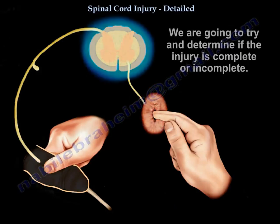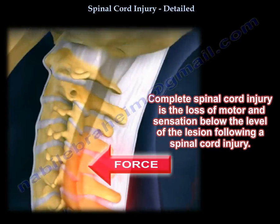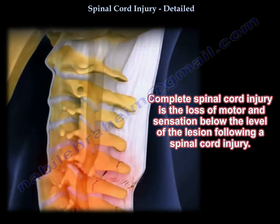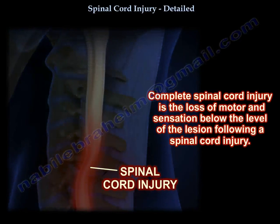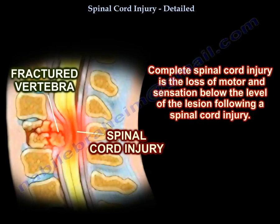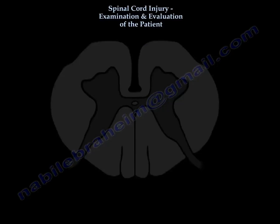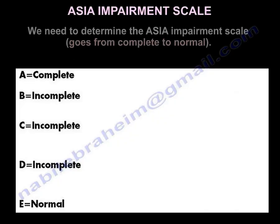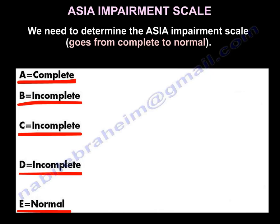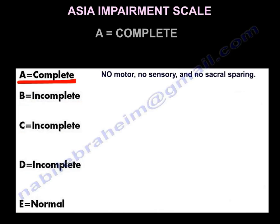We determine if the injury is complete or incomplete. Complete means no motor or sensory below the level of the lesion. We need to determine the ASIA impairment scale, which goes from complete to normal: A, B, C, D, E. Grade A is complete - no motor, no sensory, and no sacral sparing.